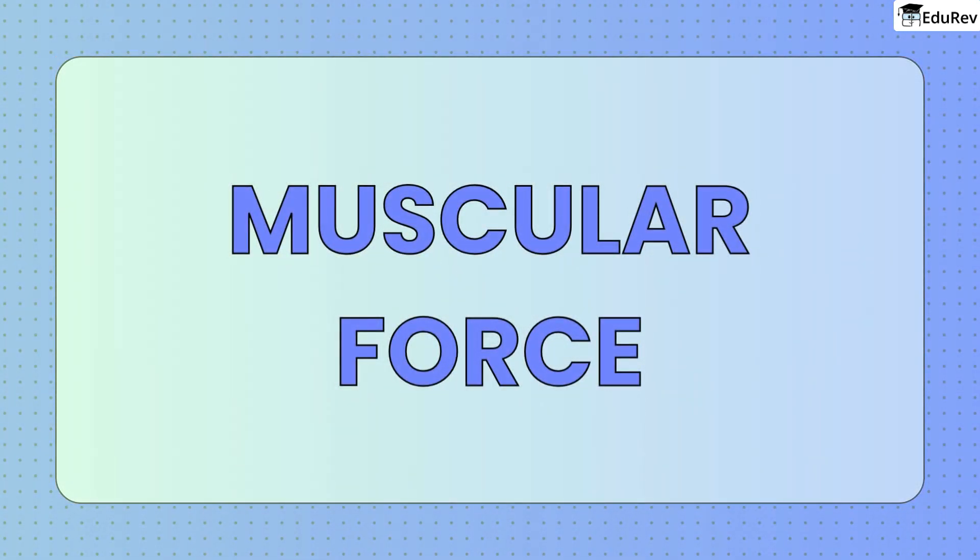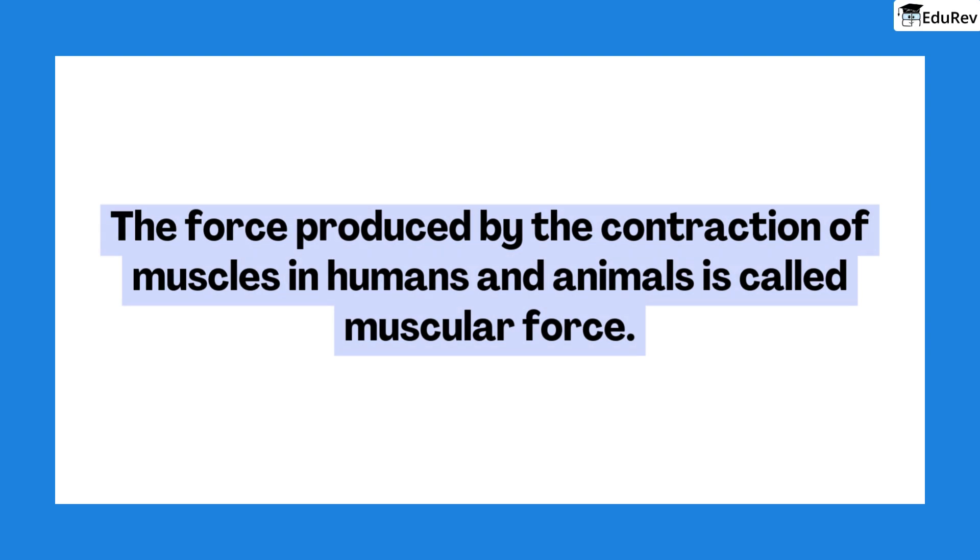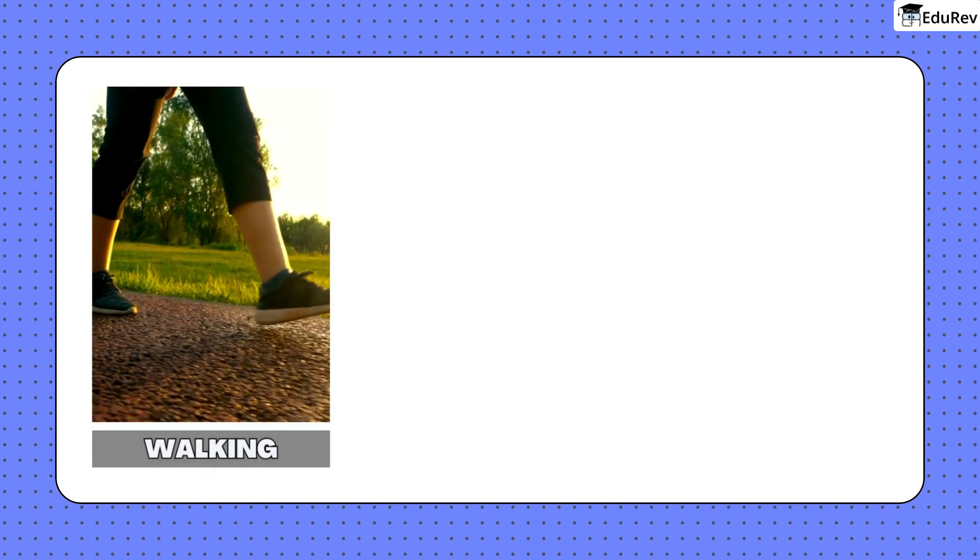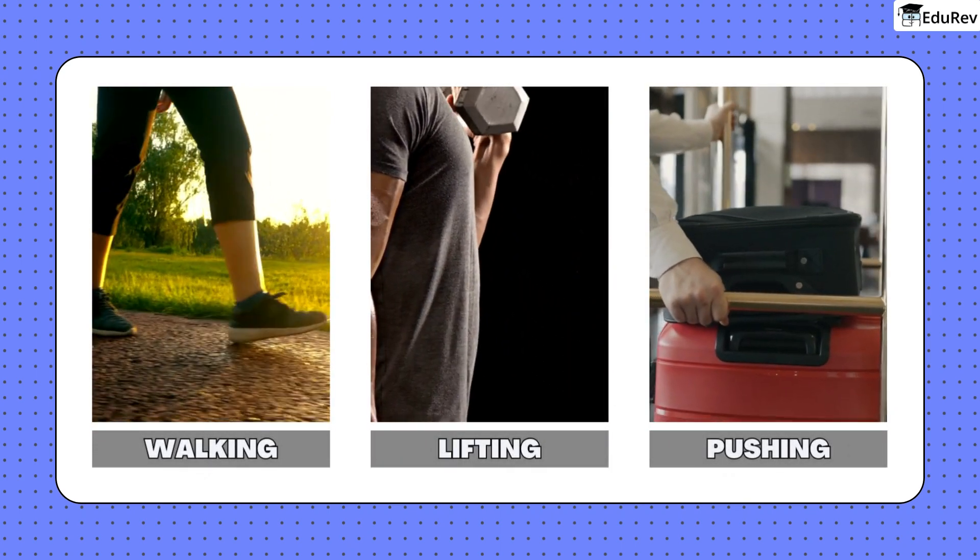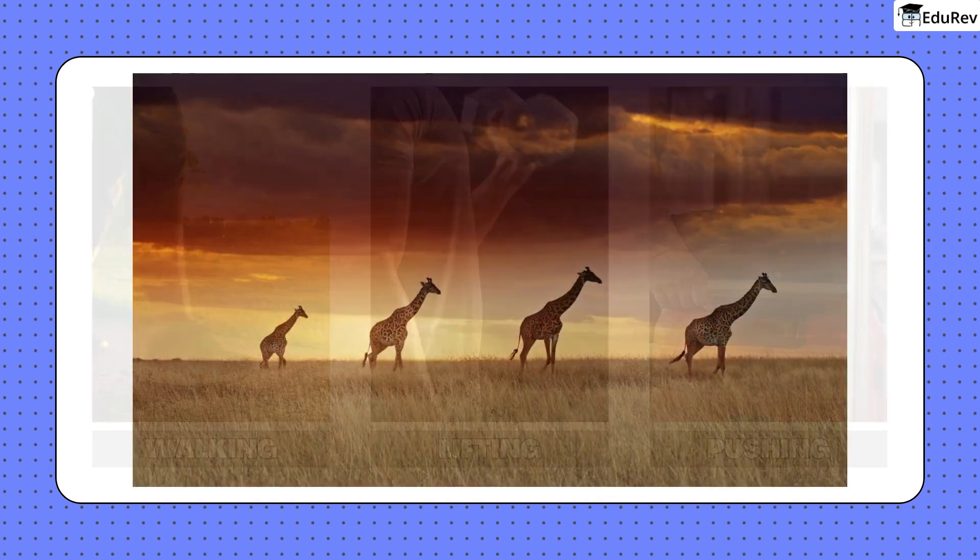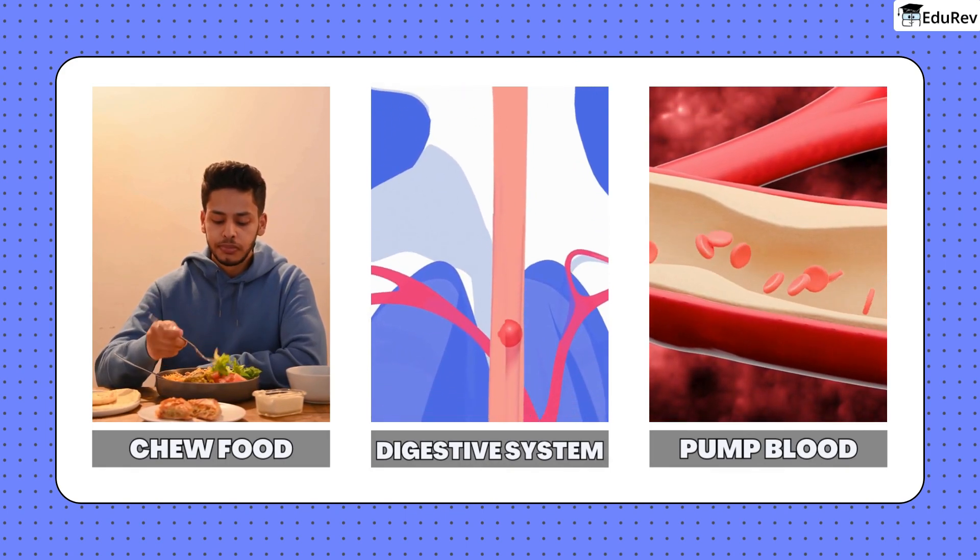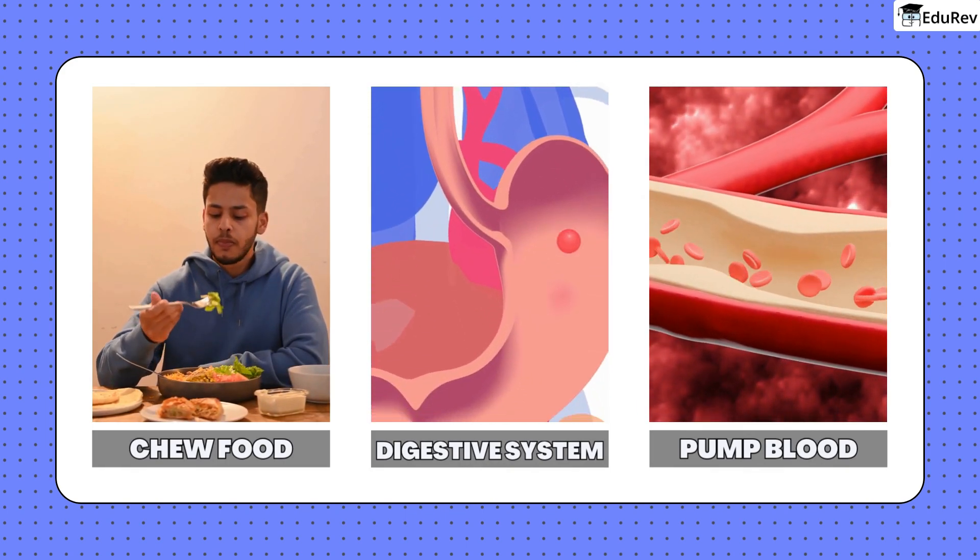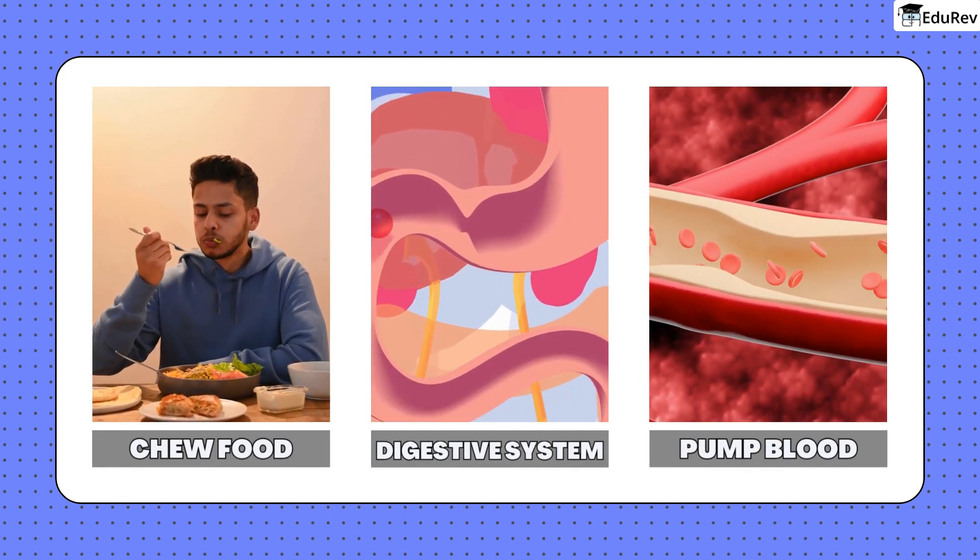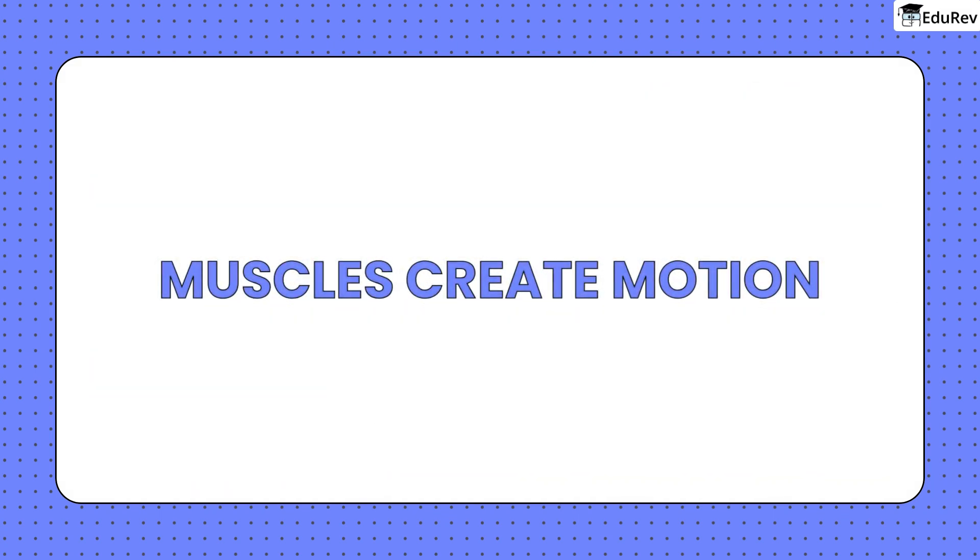Muscular force. The force produced by the contraction of muscles in humans and animals is called muscular force. Walking, lifting, pushing all come from contracting muscles. Animals use muscular force too. Even inside us, muscles help chew, move food along the digestive tract and pump blood through the heartbeats. Muscles create motion.